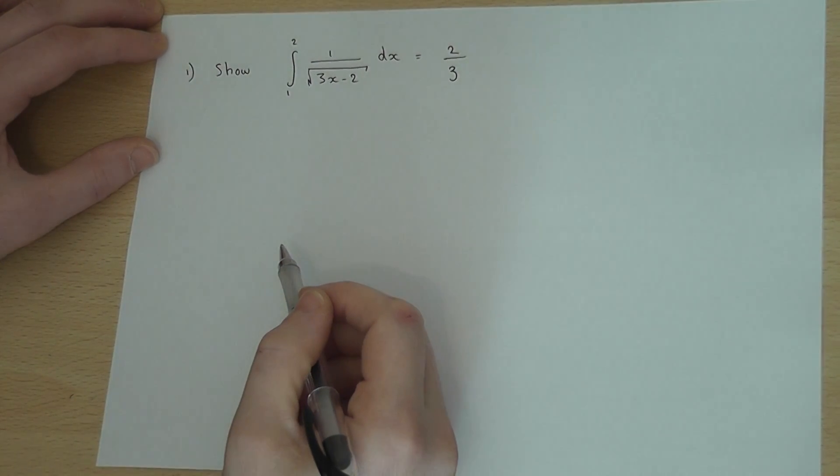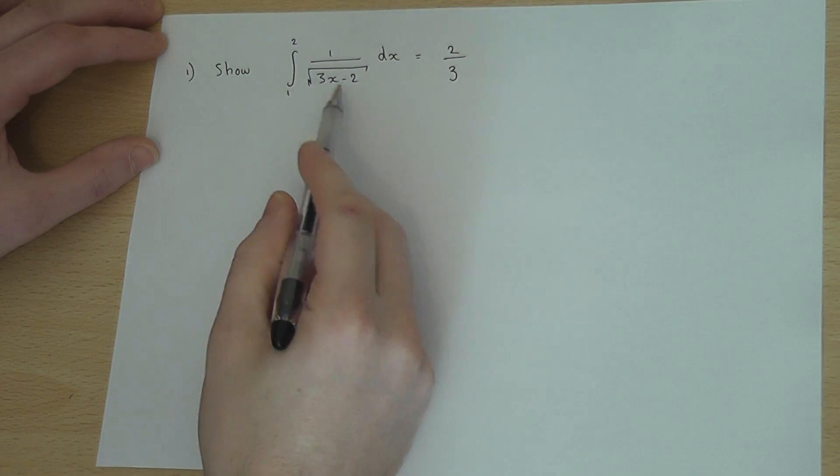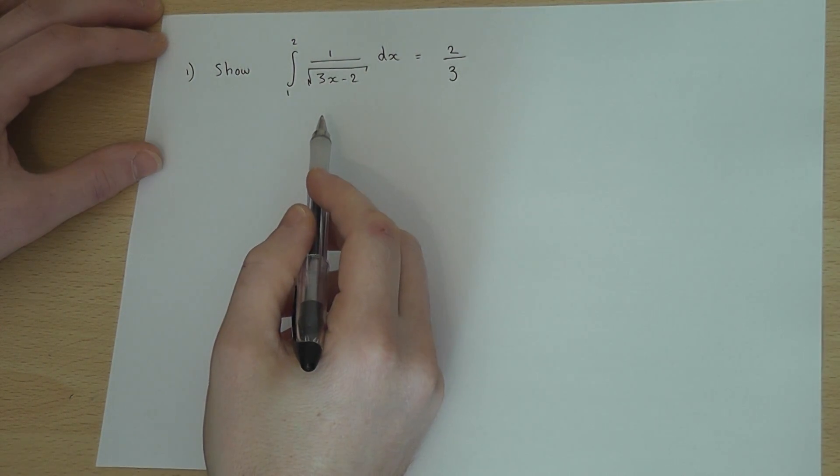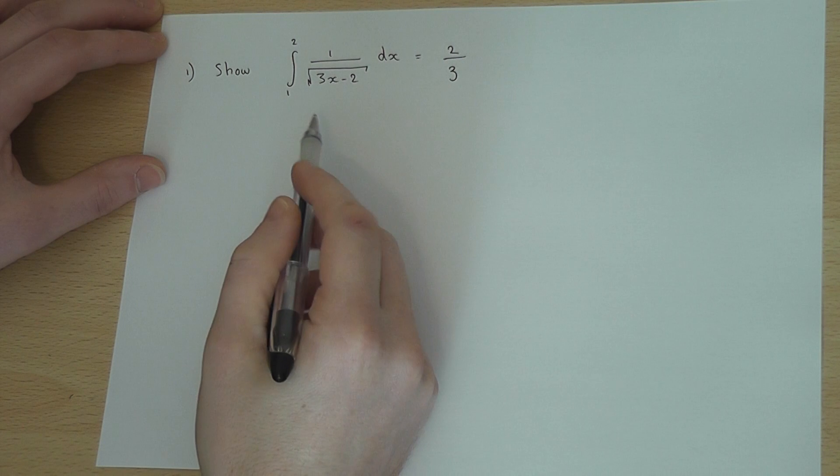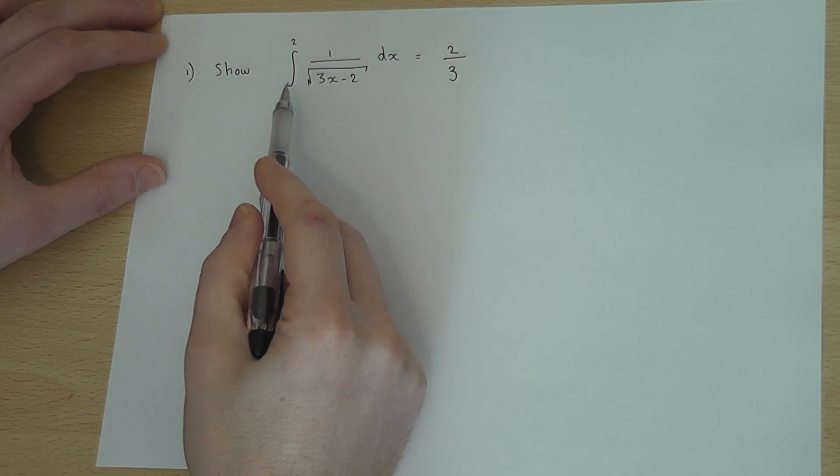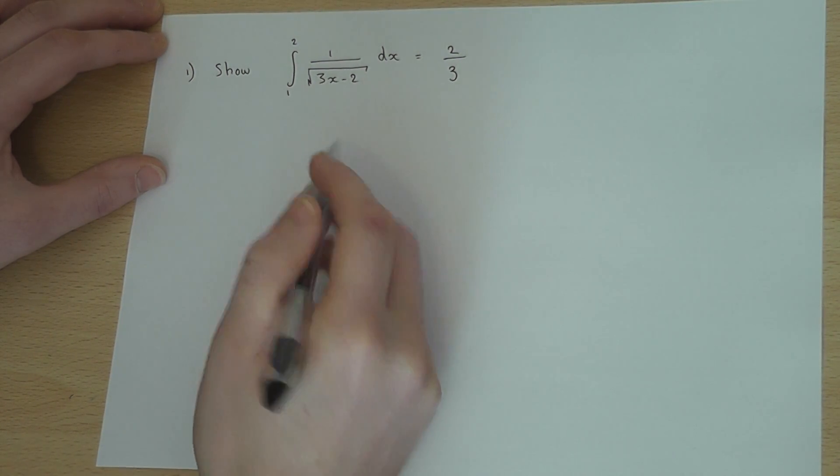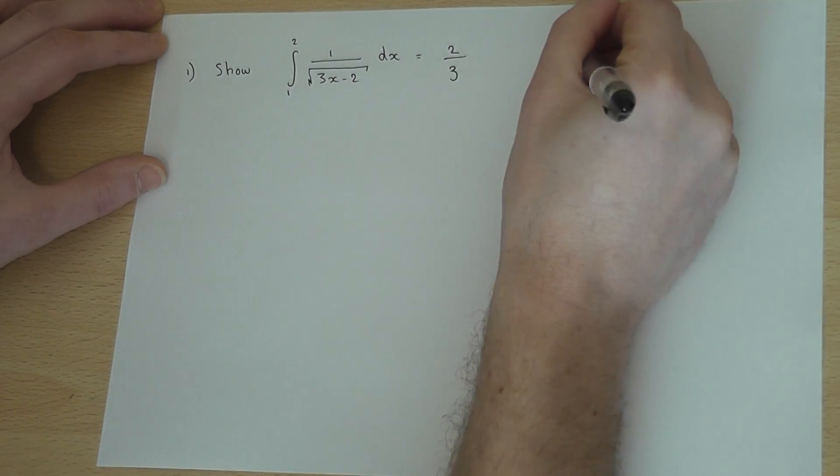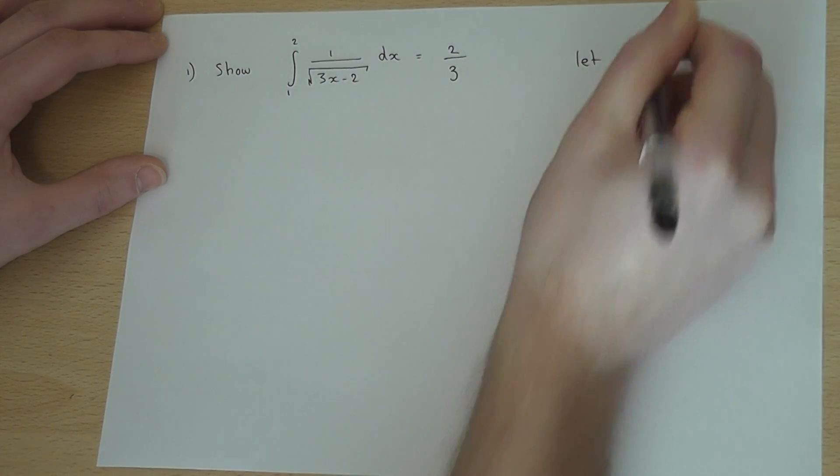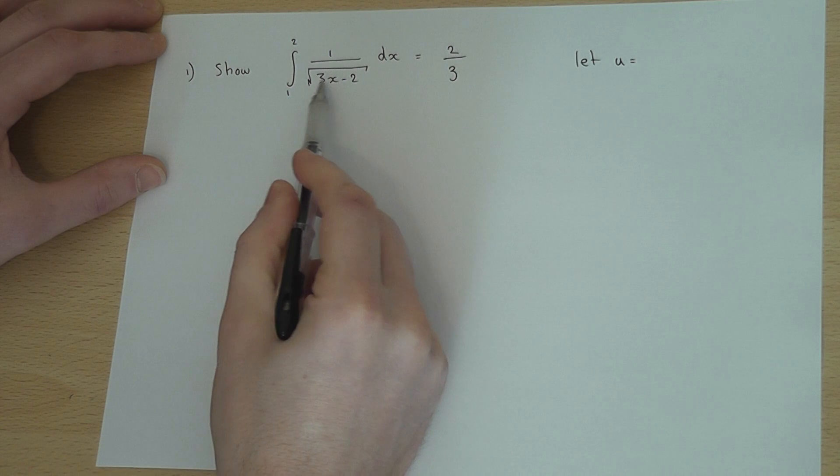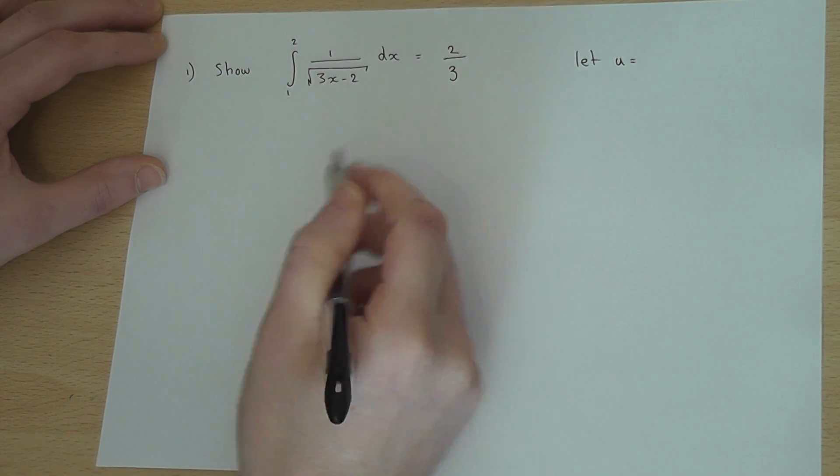This video looks at how we can use integration by substitution to integrate a more complex-looking integral. If we have to integrate a function of this form, we can let u equal the function within the square root.